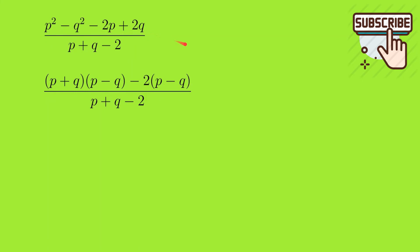This is divided by p plus q minus 2. Now we can take (p minus q) common in these two, so we have (p minus q) times (p plus q minus 2). p plus q minus 2 cancels, so we have p minus q as our answer.